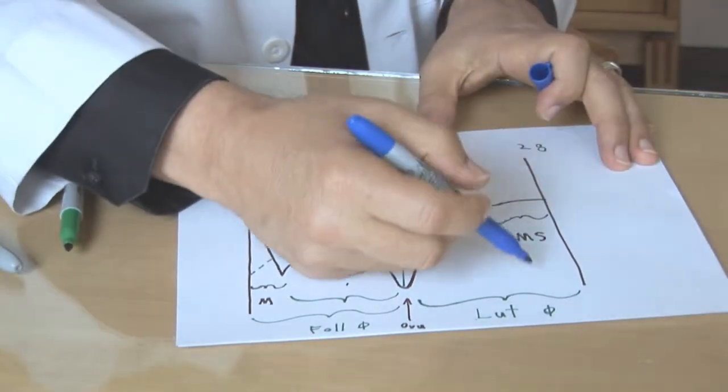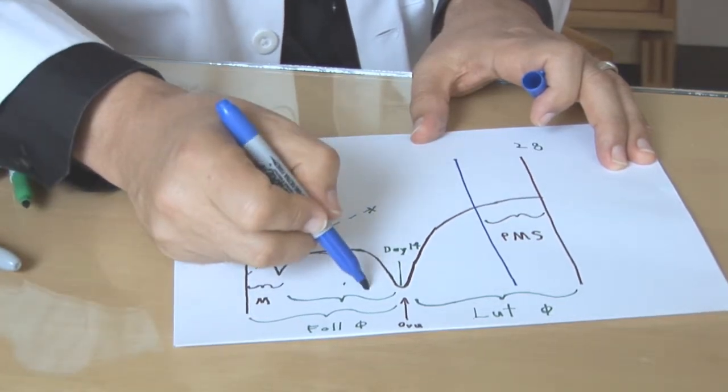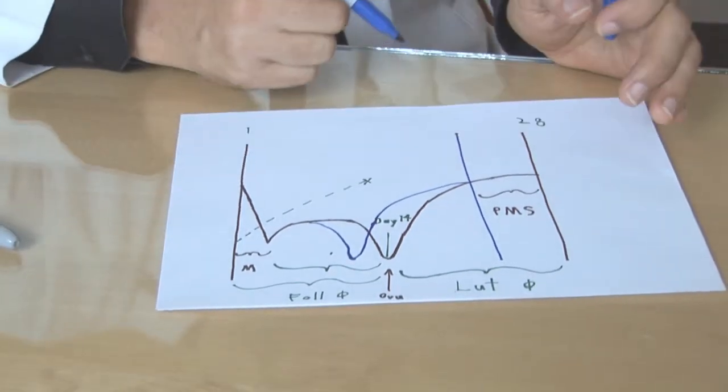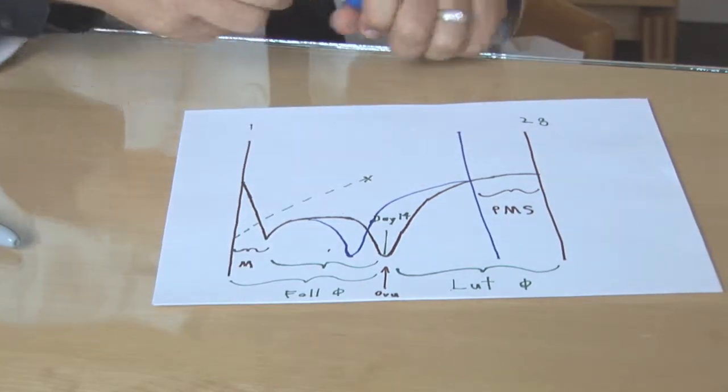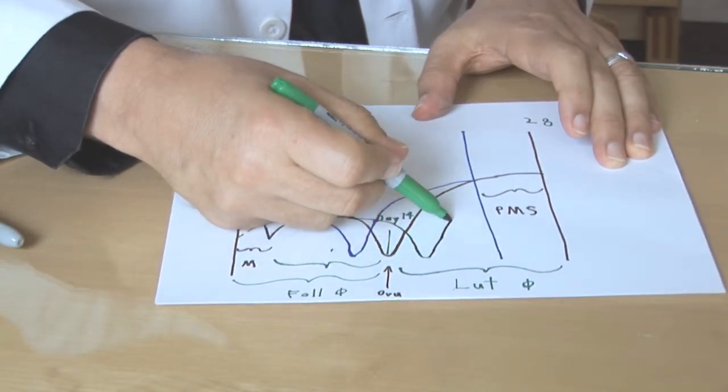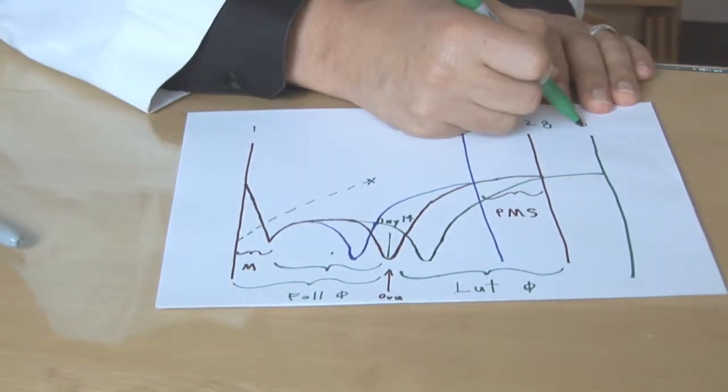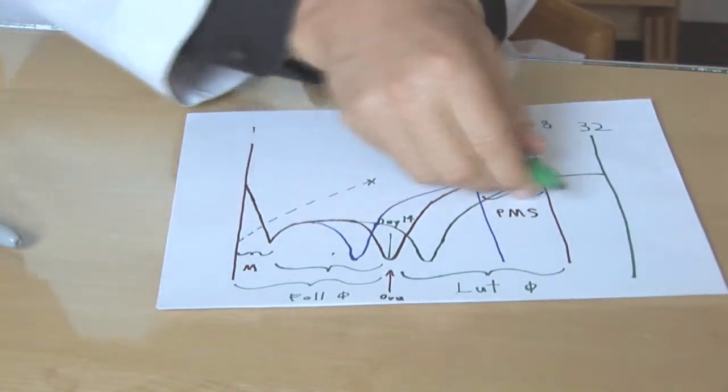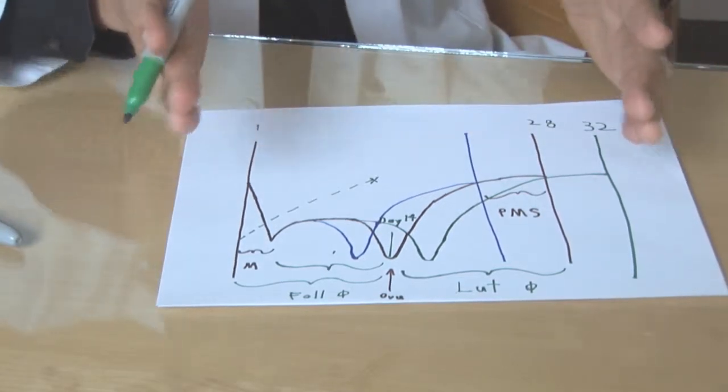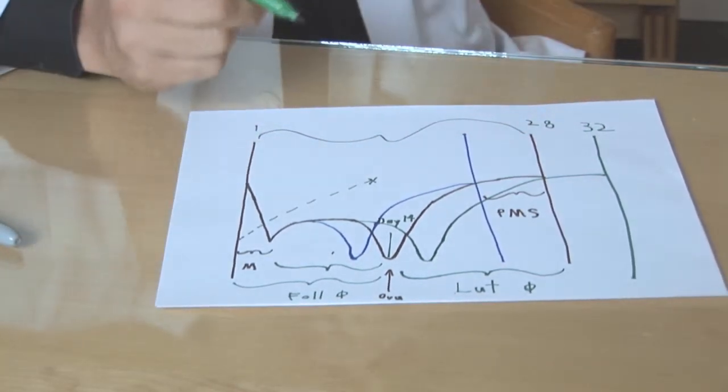If you ovulate sooner, then this part of the cycle happens sooner. And therefore, the end of the overall cycle happens sooner. So if you have ovulation here, then you're going to have this occurring sooner. That is one of the reasons that women will have a shortened cycle. Or it may take a while before ovulation occurs, and therefore it takes longer to get to the end of that cycle. So you may have like a 32, 33 day cycle or even longer. This all has to do with the balance of hormones.